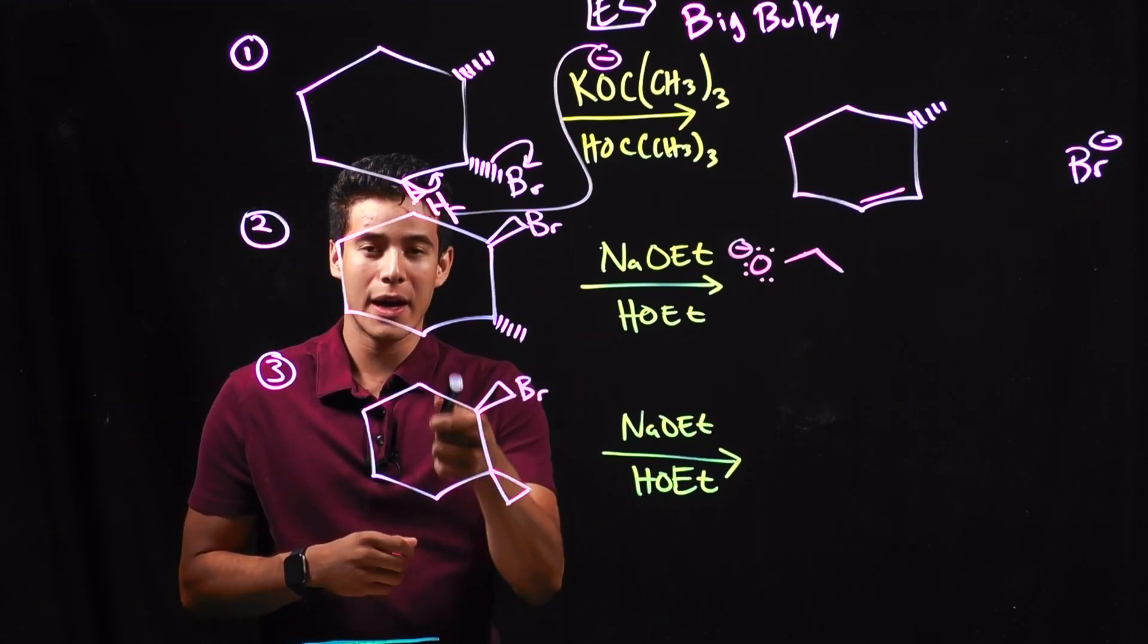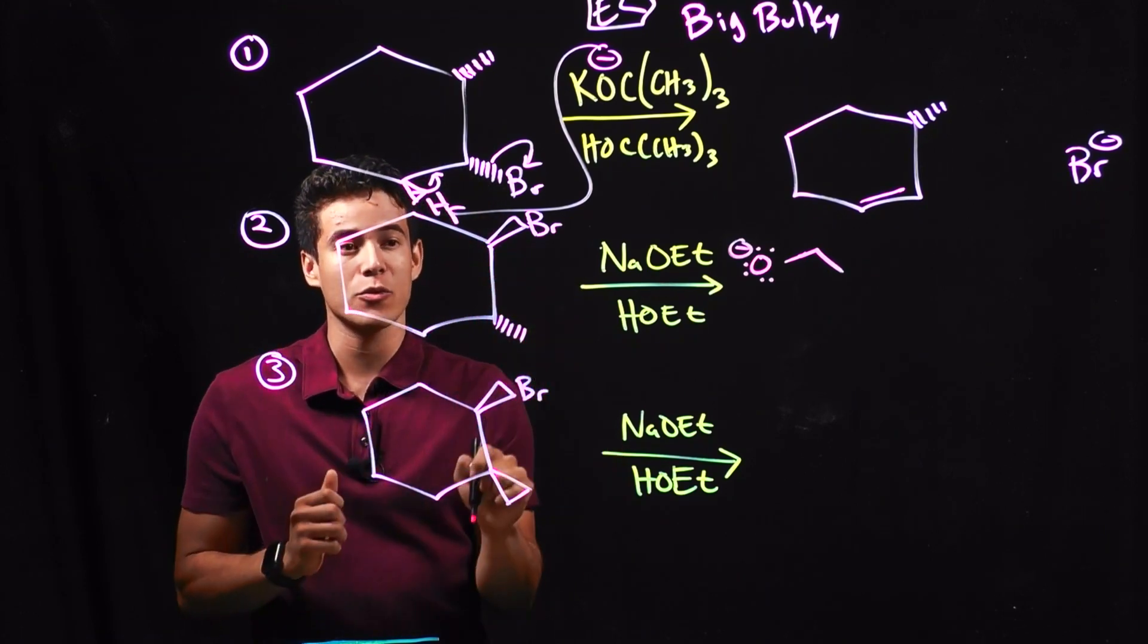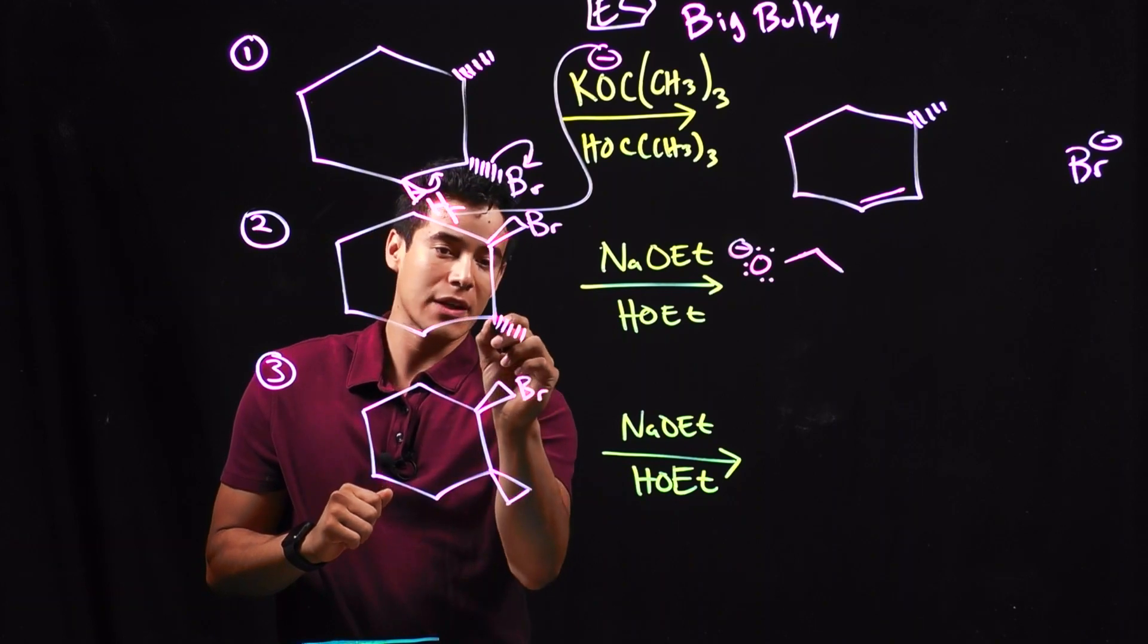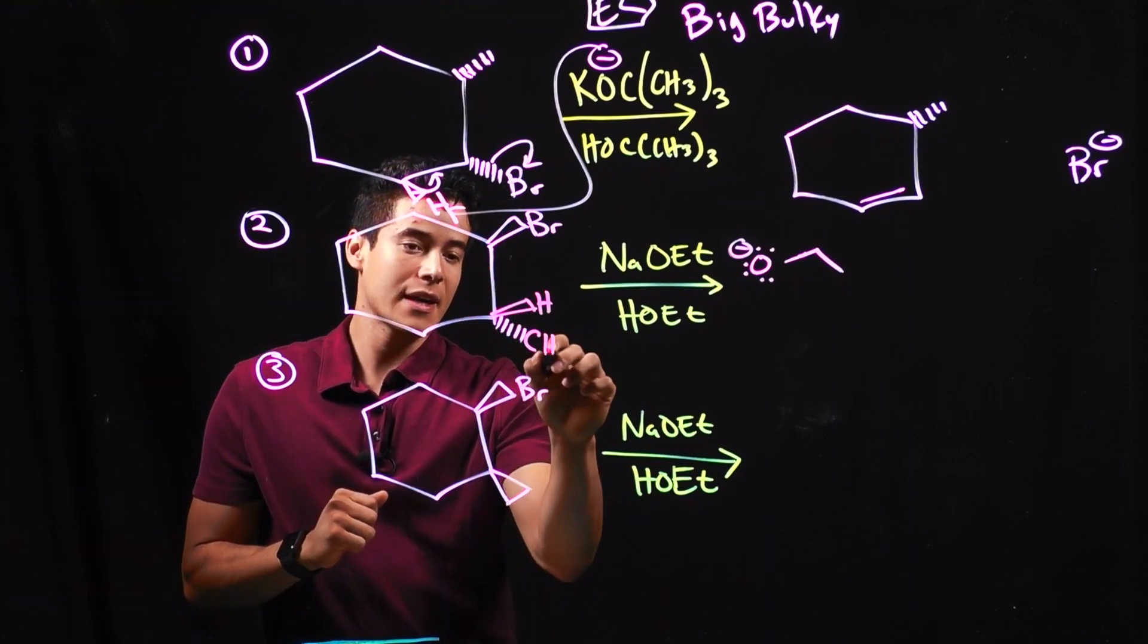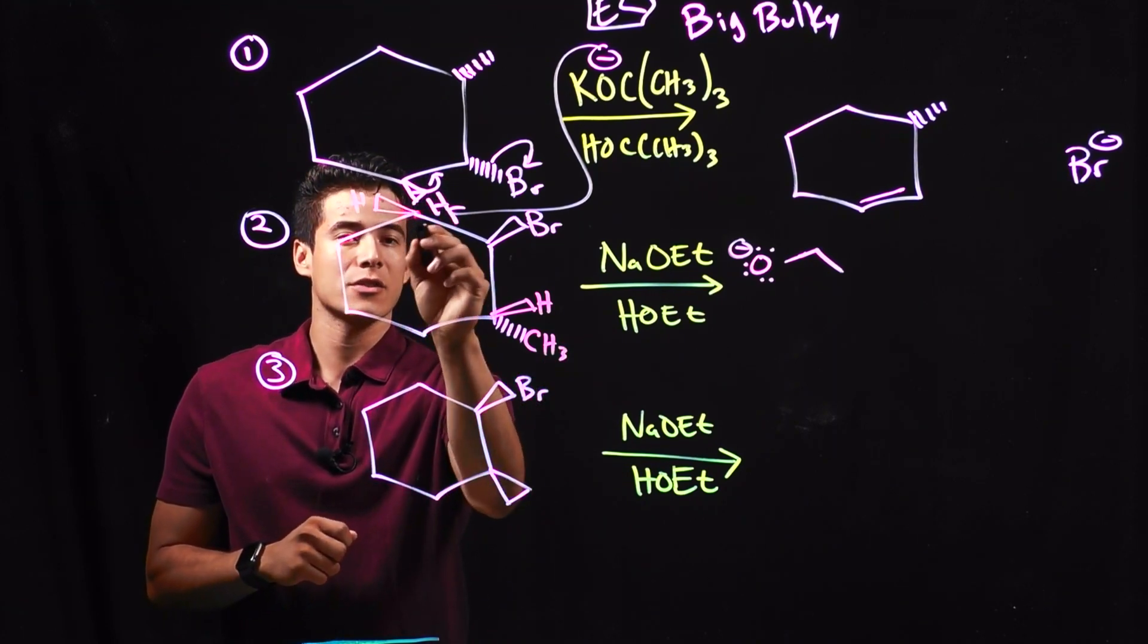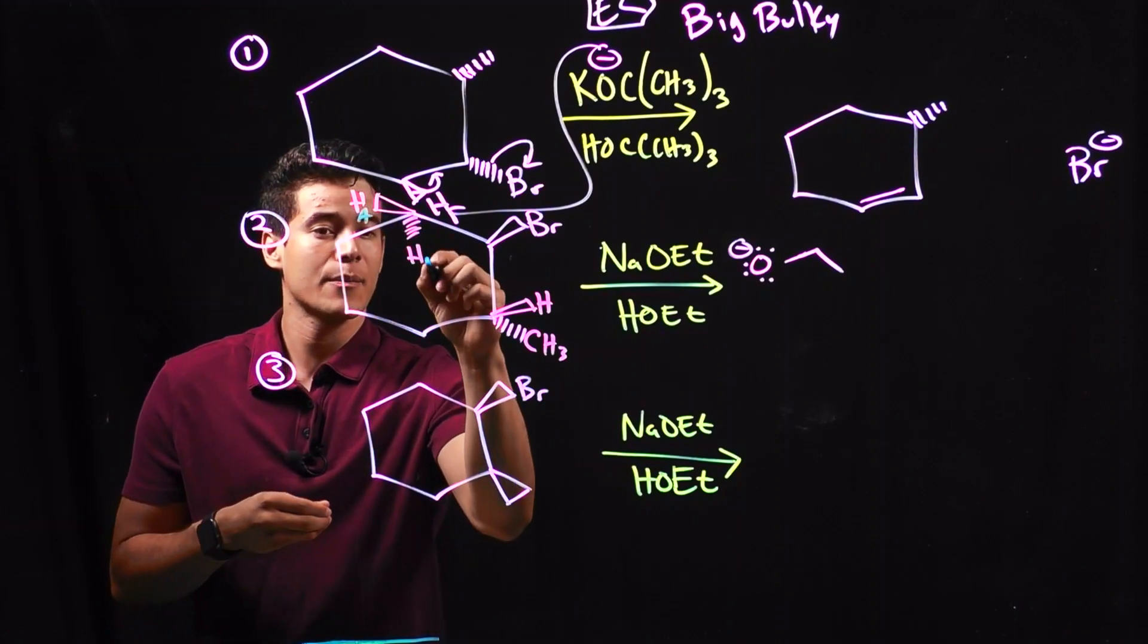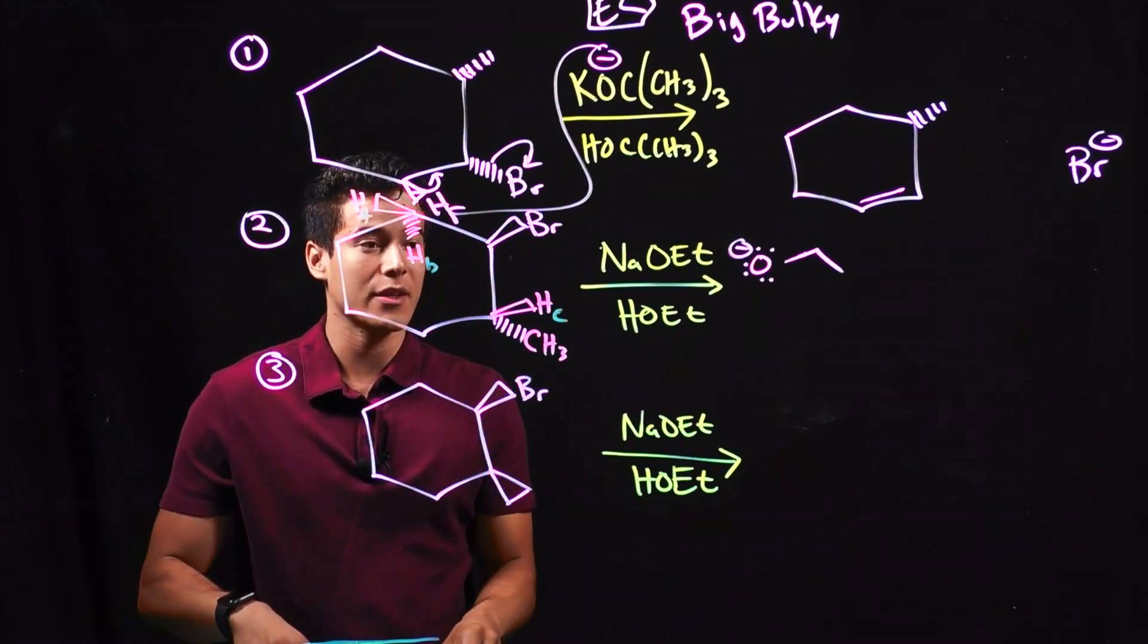When I grab a hydrogen, I want my hydrogen to be 180 degrees from my leaving group. So if my leaving group is coming out of the board, I need to go find an H that's going into the board. So if I look here, I have an H right here. This is the CH3. And then over here, I have an H, and I also have another H right here. So I'm going to label these A, B, and C. Which hydrogen do you think we're going to be going after?